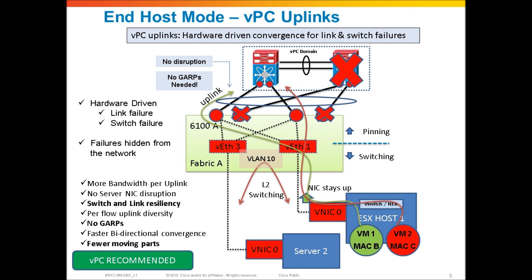We've got hardware-driven failure recovery for both link failures and switch failures. If you had hundreds of servers or thousands of VMs attached to the fabric interconnect through VMFex and had a link failure or even an upstream switch failure, there's very fast hardware-driven reaction and failure recovery. So if you have port channel uplinks, that's good, and it's even better if you combine that with an upstream LAN switch clustering technology like VPC. You have overall fewer moving parts, fewer gratuitous ARPs, and better overall load balancing and link resiliency. VPC, or upstream multi-chassis EtherChannel in general, is definitely recommended for your uplinks out of UCS.